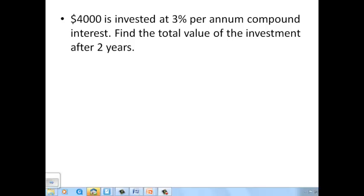Our second example states that $4,000 is invested at 3% per annum compound interest. Find the total value of the investment after two years. Be careful. This one's asking a different question. It does not want to know what the interest was. It wants to know the total value. Here you might want to try the multiplier shortcut, because you're getting the total value of that $4,000.